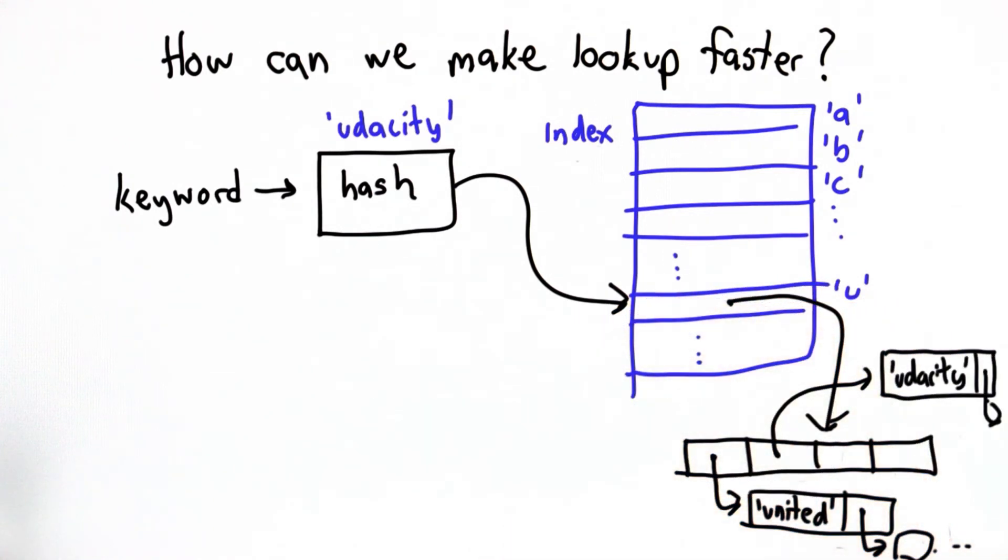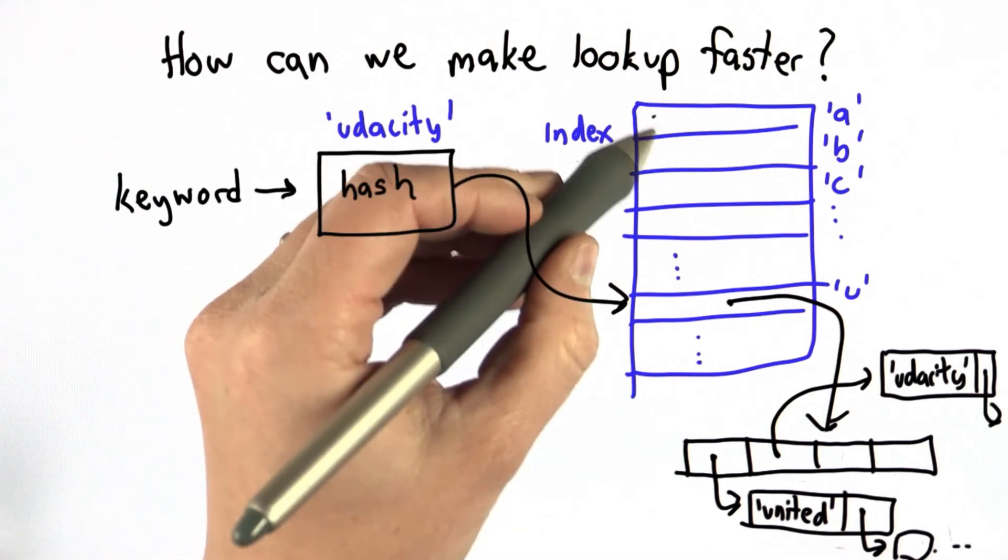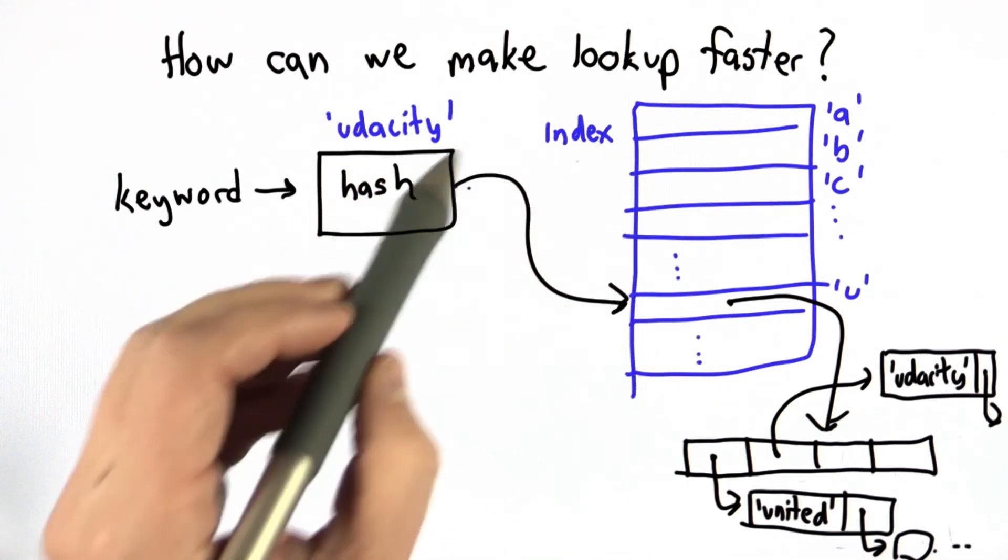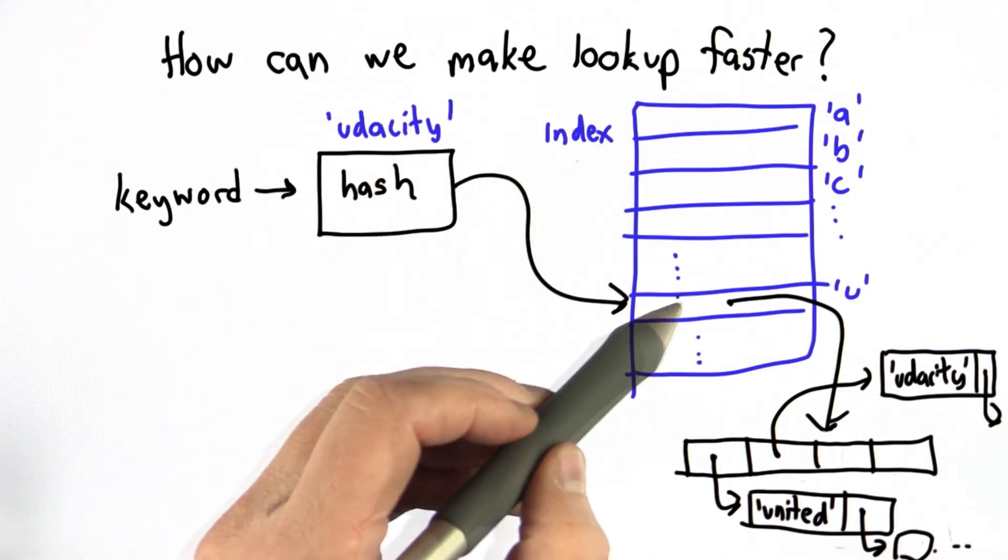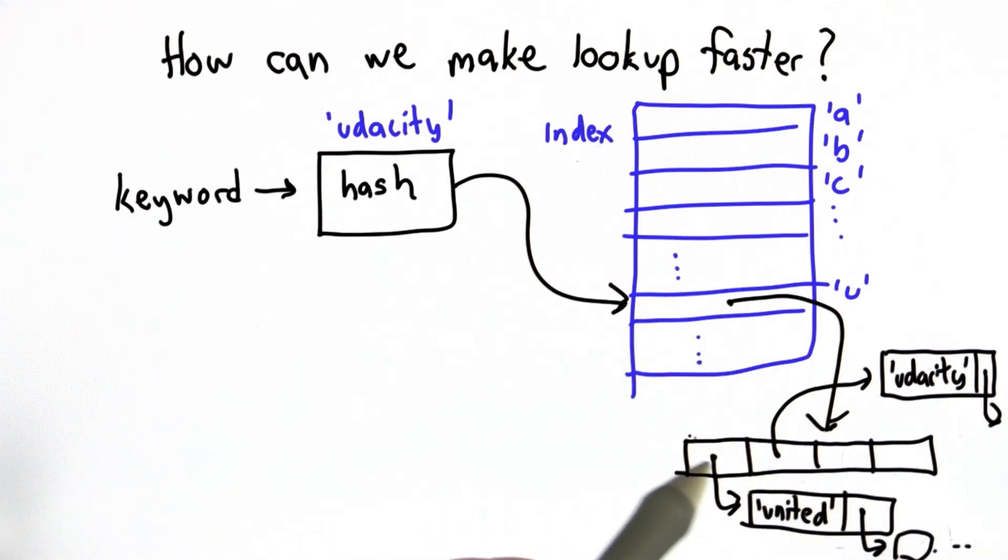So this is getting better. Now for each lookup, instead of having to look through all of the words in the index, we just need to find the position that starts with the right letter. That's got a bucket of all the words that start with that letter, and then we just need to look through that bucket. This works okay, but this doesn't really scale very well.